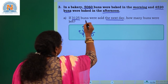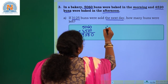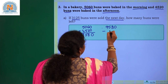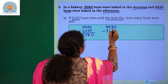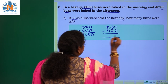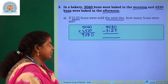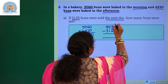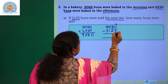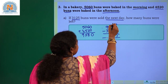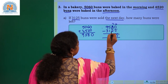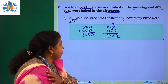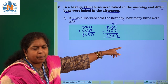On the next day, 3125 buns were sold. So you do 9580 minus 3125. Can you subtract 5 from 0? No. So you take 1 from the tens place, regroup, and 10 minus 5 is 5, leaving 7 in the tens place. Then 7 minus 2 is 5 — wait — 5 minus 1 is 4, and 9 minus 3 is 6. So how many buns were left? 6455 buns were left.